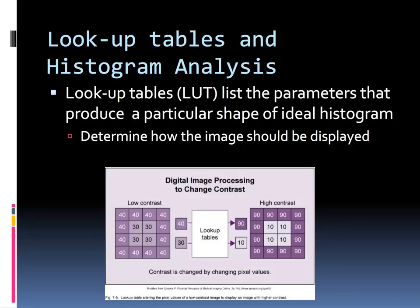Lookup tables change the brightness and contrast of an image using algebraic algorithms. As with rescaling, lookup tables are also part-specific, meaning a chest LUT will differ from an elbow LUT. This is because the contrast required to show optimal visualization of anatomy differs with these two parts.